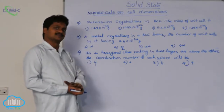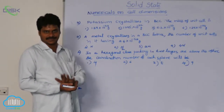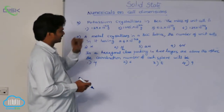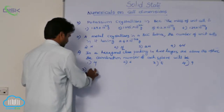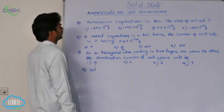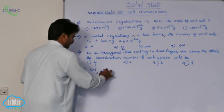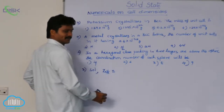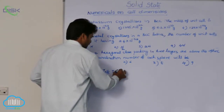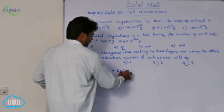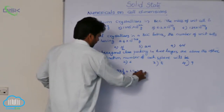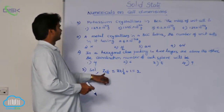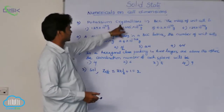Mass of the number of effective atoms equals the mass of the unit cell. Here, potassium is crystallizing in BCC geometry. In BCC, the number of effective atoms per unit cell is 2 — that is 8 corners each contributing 1/8, plus 1 body center atom. So the number of effective atoms in BCC is 2.